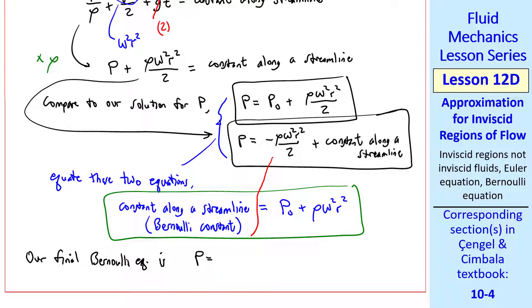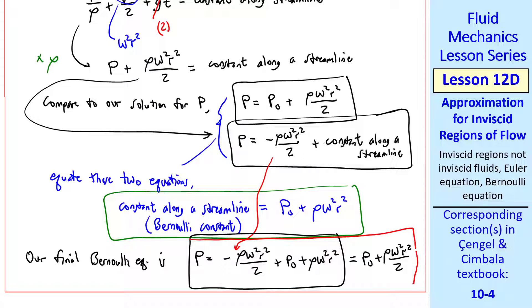Thus, our final Bernoulli equation from here, plugging in the constant, we get p equal minus rho omega squared r squared over 2 plus p naught plus rho omega squared r squared, which reduces to p naught plus rho omega squared r squared over 2. This agrees with our previous solution, so we're happy about that. Finally, I just want to mention that this so-called Bernoulli constant is really not a constant, it's a function of r. But it is constant along any streamline. The so-called constant changes from streamline to streamline. In this case, the Bernoulli constant gets bigger as we increase radius.